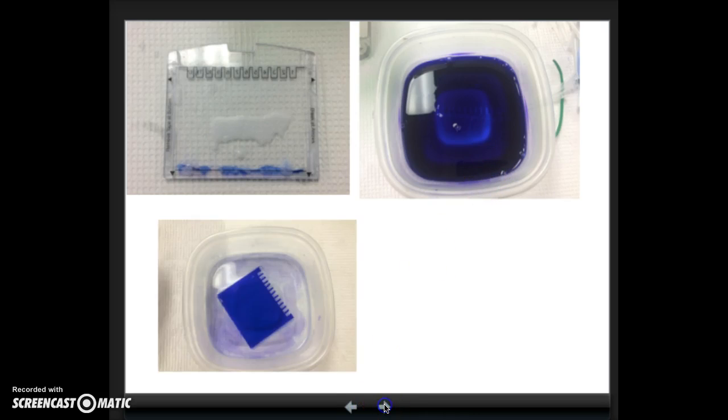But after staining them, we have a problem in that it turns everything blue. The whole gel is blue. So we have to add it to a destain to remove the blue from the gel and just leave the blue where it's actually binding to the protein.